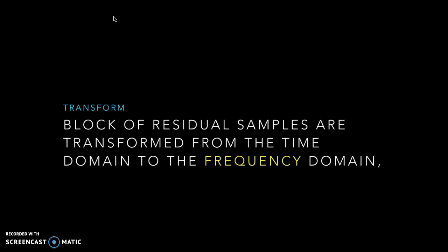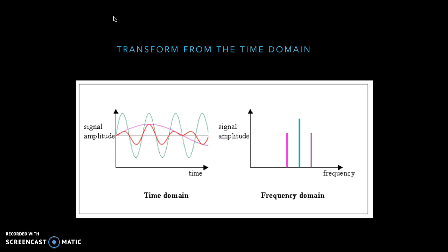In this video we're going to talk about transform. Transform is a process of transforming a block of residual samples from the time domain to the frequency domain. The time domain signal is depicted in the diagram, and then it's transformed to the frequency domain, which is depicted on the right side — that's what the process of transform does.